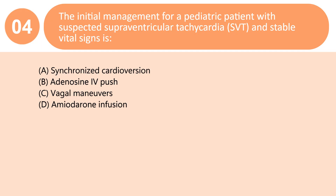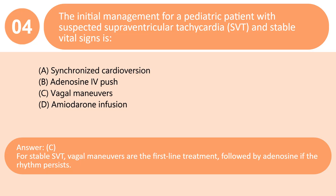The initial management for a pediatric patient with suspected supraventricular tachycardia (SVT) and stable vital signs is: A. Synchronized cardioversion. B. Adenosine IV push. C. Vagal maneuvers. D. Amiodarone infusion. Answer: C. For stable SVT, vagal maneuvers are the first-line treatment, followed by adenosine if the rhythm persists.